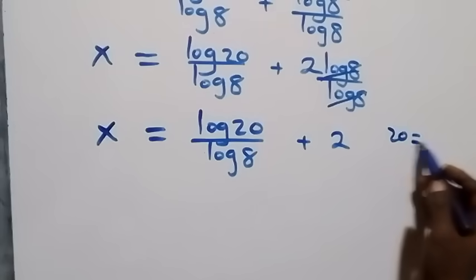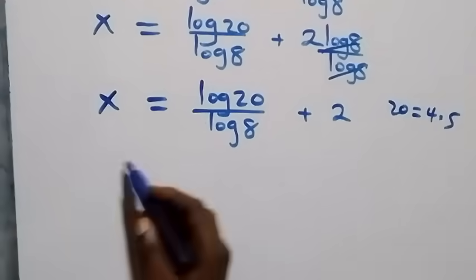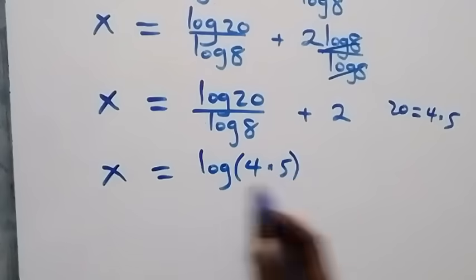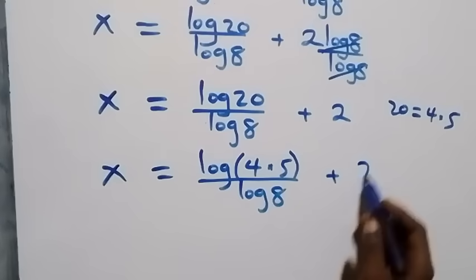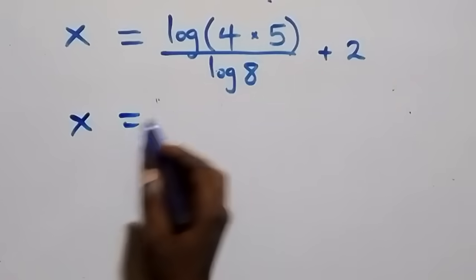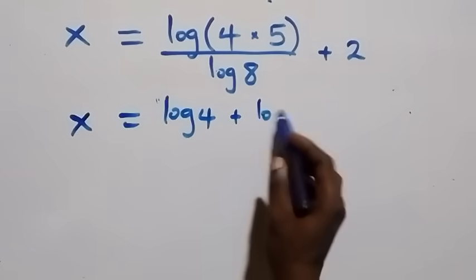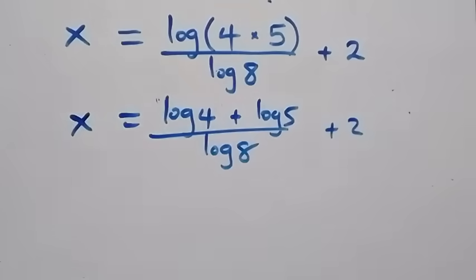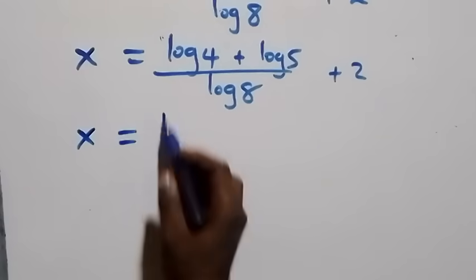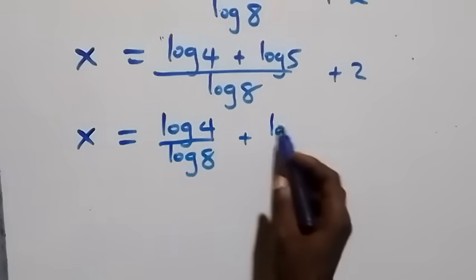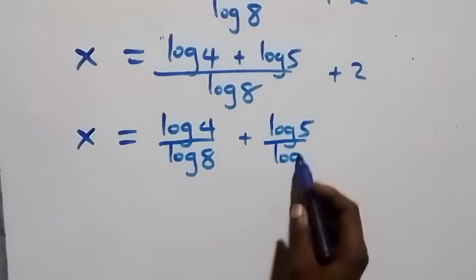Also, let's write 20 as 4 times 5. Then what we have becomes x equals log of 4 times 5 over log 8 plus 2. Applying the law of logarithms, x equals log 4 plus log 5, over log 8, plus 2. Separating into two fractions: x equals log 4 over log 8, plus log 5 over log 8, plus 2.